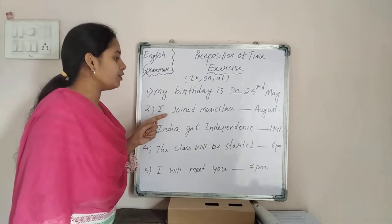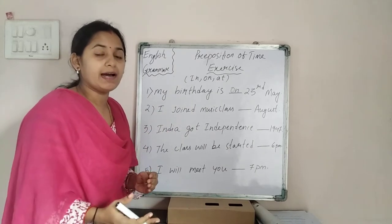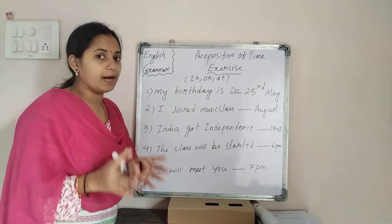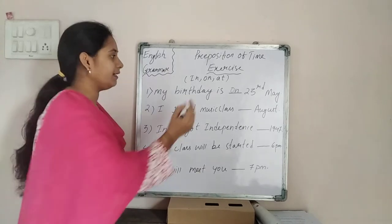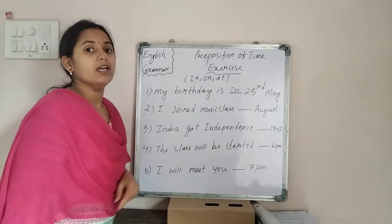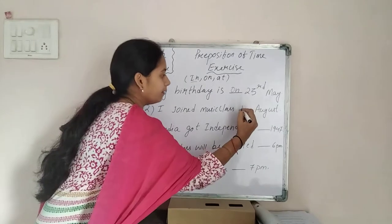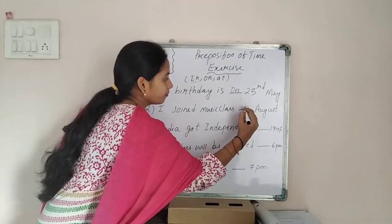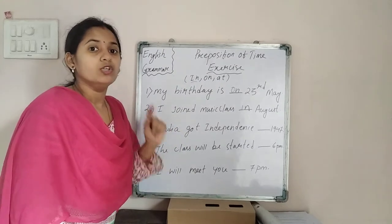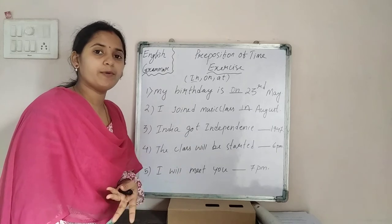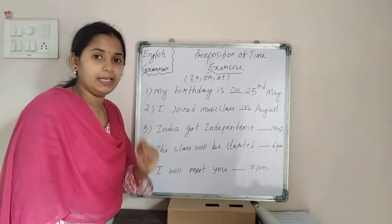Moving to the next one: I joined music class dash August. August is a month, and before a month we have to use in. So the answer is: I joined music class in August. Before any month — January, February, and so on — you have to use in.